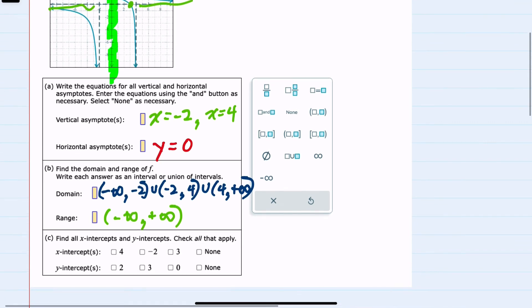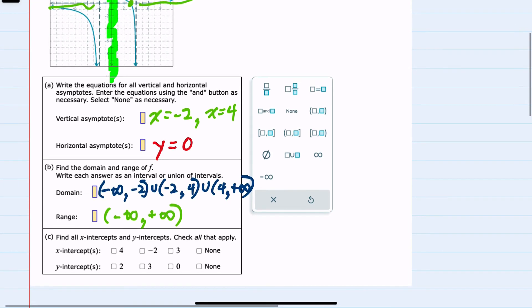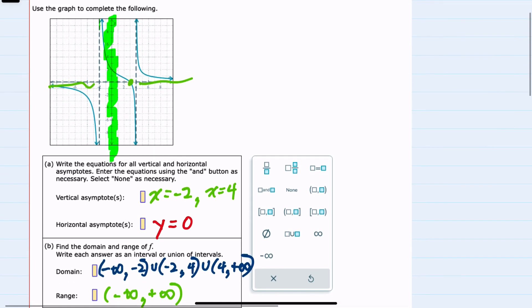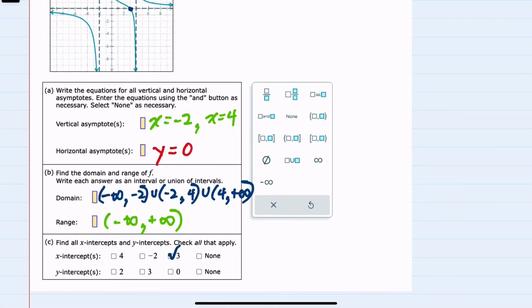And then lastly for part C we're asked for both x and y intercepts. Starting with the x intercepts, I can see that this graph crosses the x-axis once right here. That's the only time it crosses the x-axis, so our only x-intercept is going to be where the value is 3. So that was one of our options.